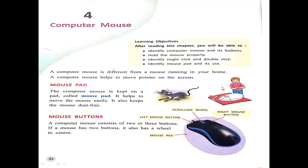Let's start reading. A computer mouse is different from a mouse running in your home. The computer mouse helps to move the pointer on the screen. Here you will see two pictures — one of an animal mouse and one of a machine mouse. An animal mouse sometimes comes to our home, but the computer mouse is a machine part. The name is the same, but one is a machine and one is an animal.